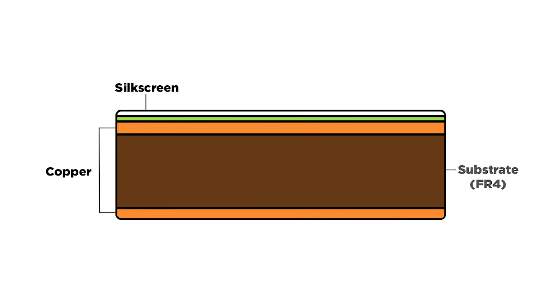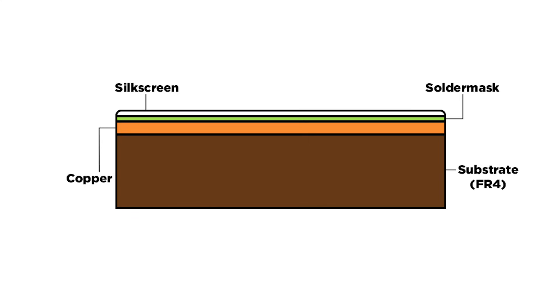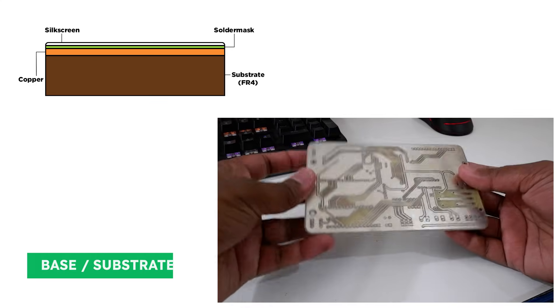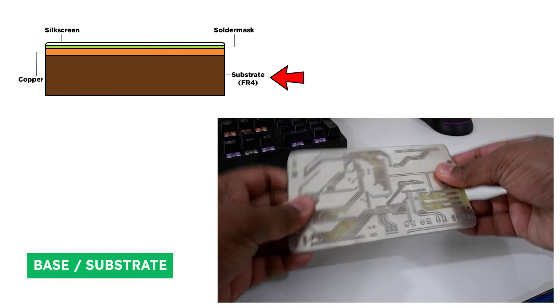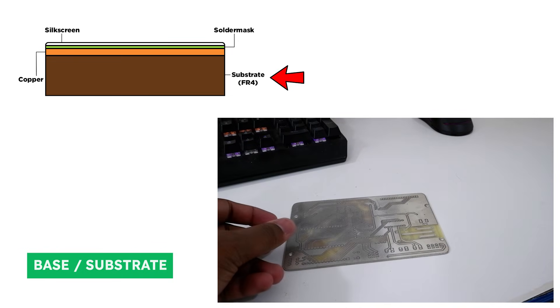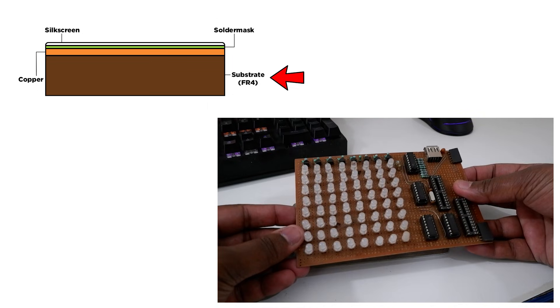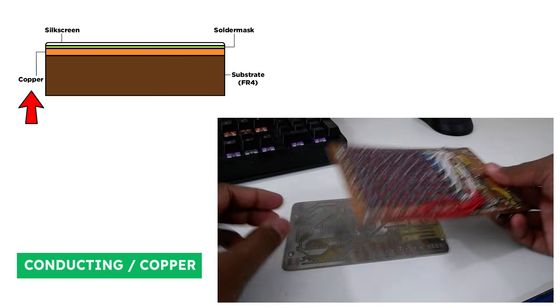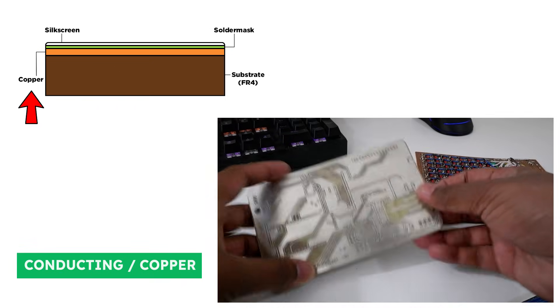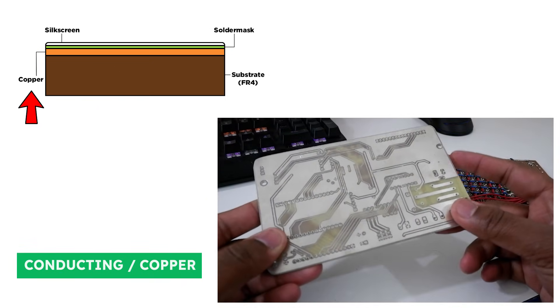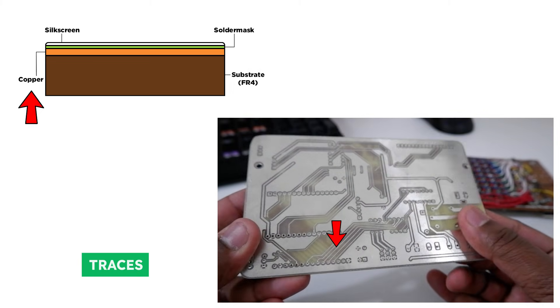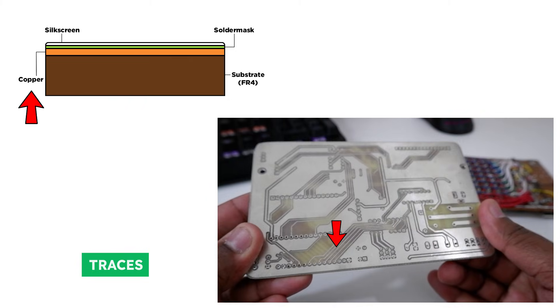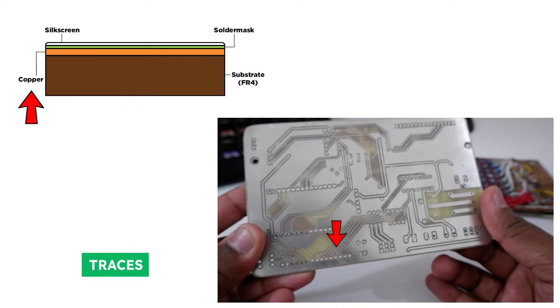Printed circuit boards are made of various layers stacked up. To keep things simple, let's talk about a single layer PCB. First, we have the base — a fiberglass material which is a solid core that gives the PCB its rigidity and thickness. It mechanically holds the connections and components, just like a perfboard or a breadboard. Then we have the conducting layer, which in most cases is made of copper and connects electrical connections between components just like traditional wires. These connections are called traces, and they can be of various widths and lengths depending on what we are planning to connect, which we'll discuss in more detail as we make our own PCB.